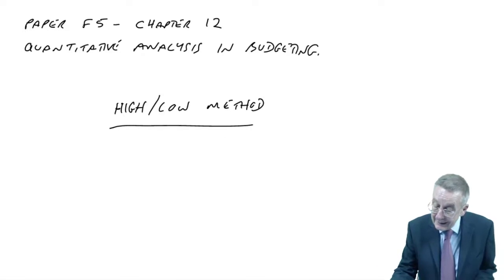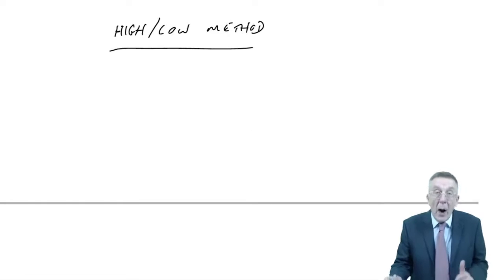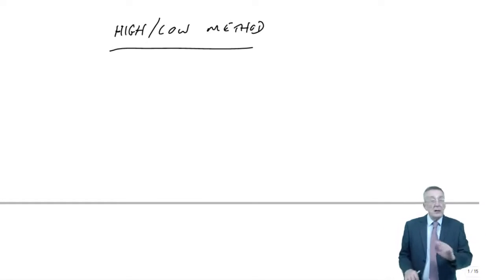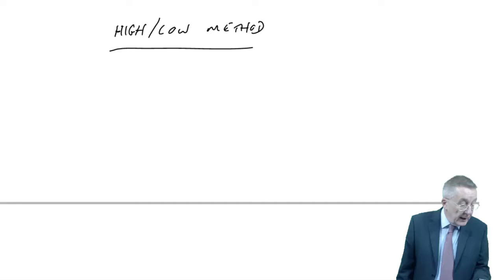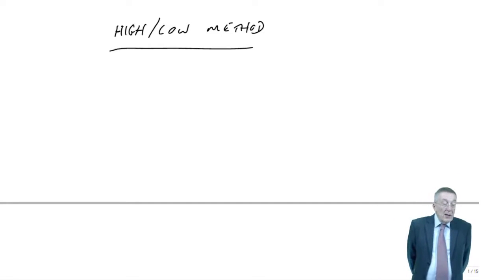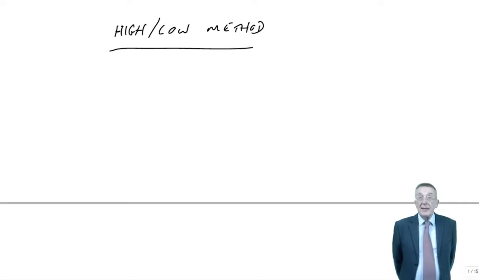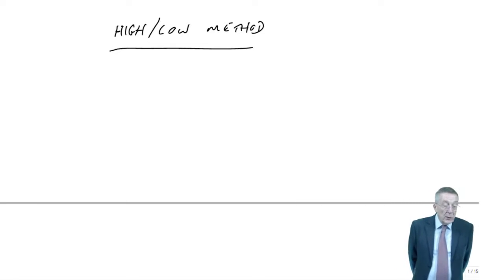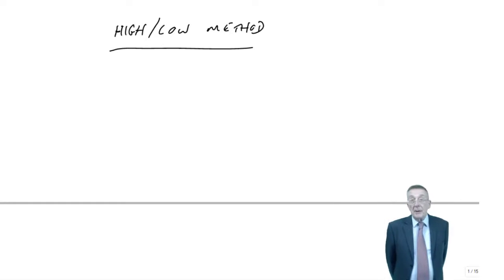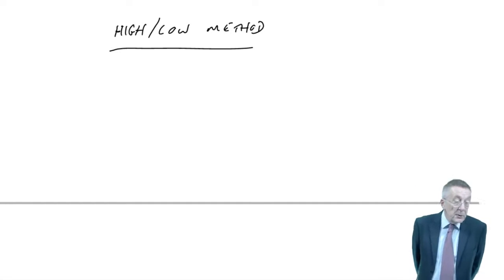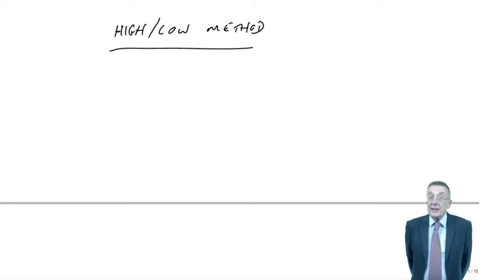So, high-low method is a very simple, a very approximate way of attempting to split out how much is the fixed, and how much is the variable. To show you how we do it, if you turn to example one, the following table shows the number of units produced each month and the total cost incurred. 100 units in January, we spent 40,000. In February, we produced 400, we spent 65,000.